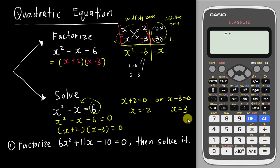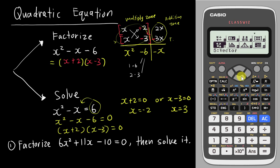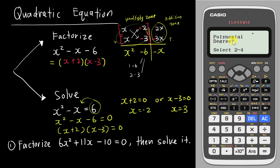I can also use the calculator to help me do the factorization, because in the exam you don't need to show all this working — especially if you are an SPM student. So you just go to Menu, look for Equation, then look for Polynomial, which is number 2. They ask about polynomial degree, which is the highest power of x — so you choose 2.